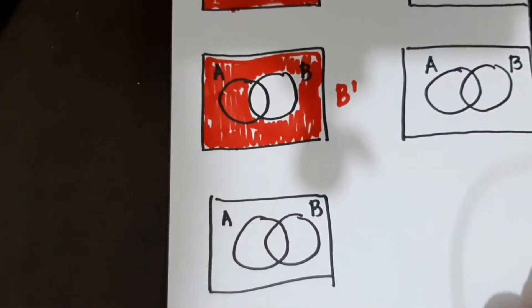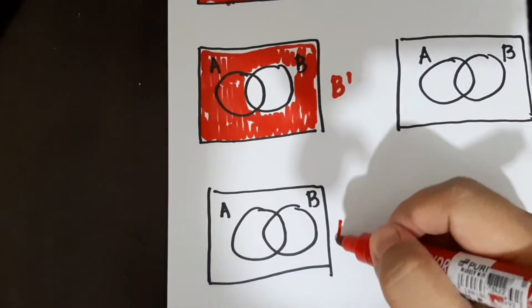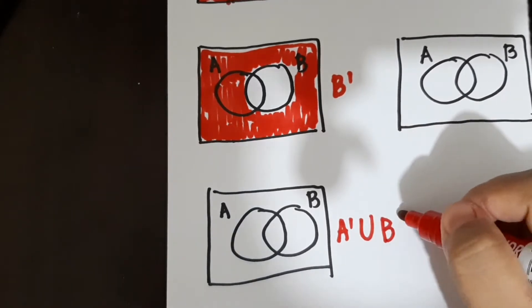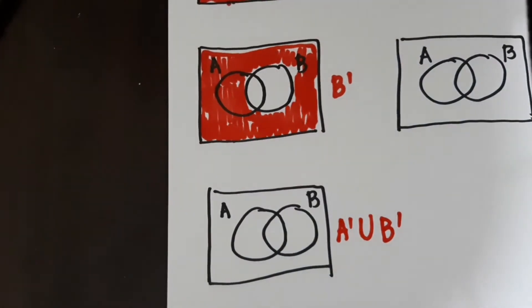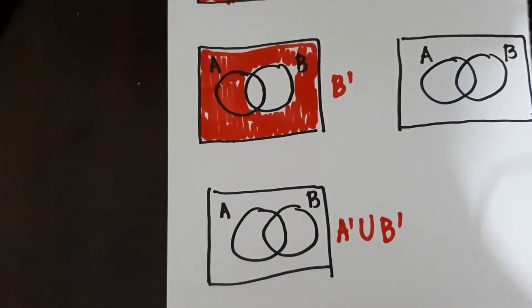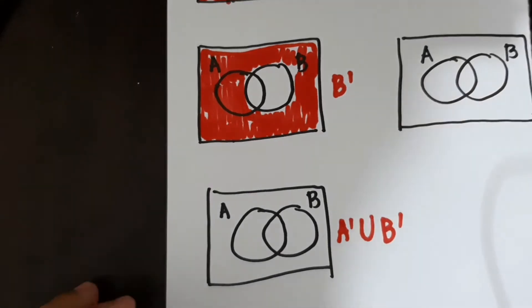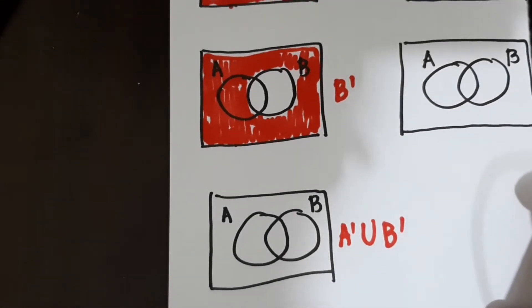So doon na tayo sa final answer, which is not A union not B. So alam natin pag union, dapat lahat ng may shade sa not A, at lahat ng shade sa, lahat ng may shade sa not B, ay pagkasamahin natin, since union kasi sya, diba?